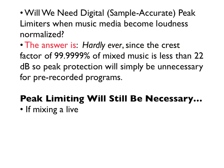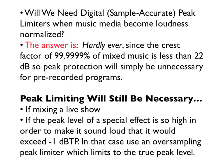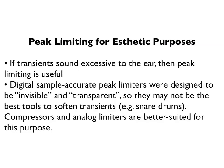Peak limiting will still be necessary if you're mixing a live show, or if the peak level of a special effect is so high that in order to make it sound loud it would exceed minus 1 dB true peak — in that case, use an over-sampling peak limiter which limits to the true peak level. For peak limiting for aesthetic purposes: if the transients sound excessive to the ear, peak limiting will be useful. But digital sample-accurate peak limiters were designed to be invisible and transparent, so those devices may not be the best tools to soften transients like snare drums. Compressors and analog limiters are better suited for the aesthetic purpose.